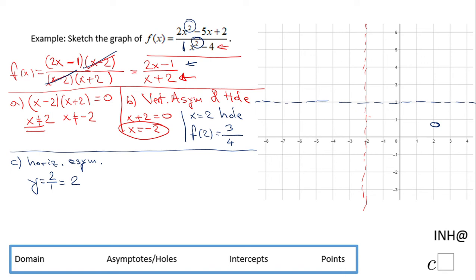So we're finished with asymptotes. We can move to the next thing, which is the intercepts.